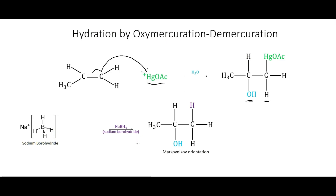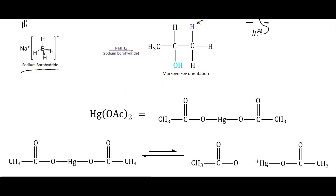Then we'll use sodium borohydride, NaBH4, which has hydrides on it. A hydride is a hydrogen with two electrons on it and a negative charge — as opposed to the hydrogen ion with a positive charge. This hydride can come in and do an SN2 reaction on that carbon, kicking the mercury off, and we end up with the hydrogen on the hydrocarbon in the Markovnikov orientation.